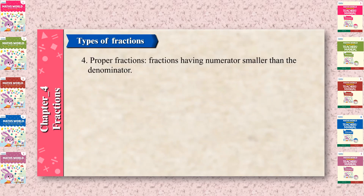Proper fractions: fractions having a numerator smaller than the denominator. Example: 2 upon 5, 3 upon 7, 5 upon 9.